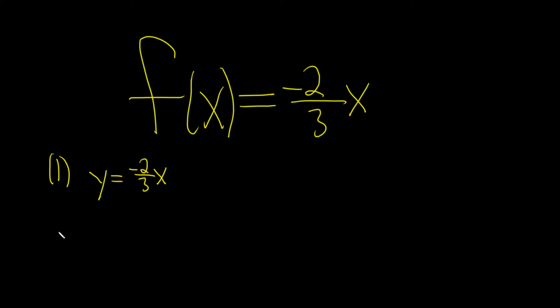The second step when finding the inverse is to switch your x and y. So step 2, this is x equals negative 2 thirds times y.